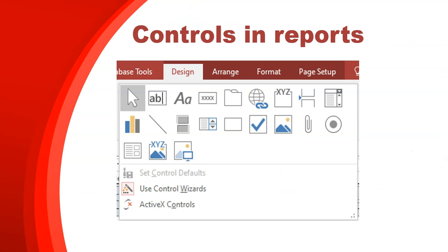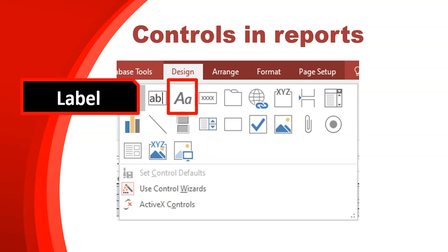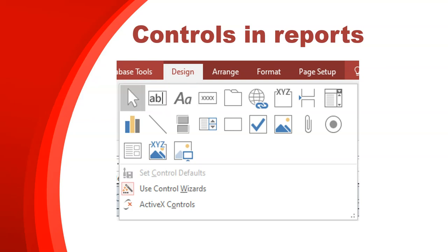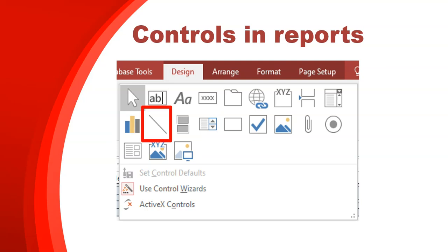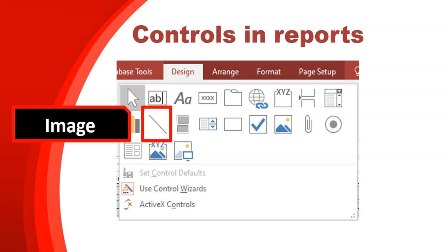There are some controls you can add to reports, very similar to what we did in forms. The basic ones: you can add a label — maybe you want to add your name or some other information on the report. If you want to connect to an image, maybe to show a logo, you can use the image component. And if you want to draw a line to separate everything, you can use that option too. We're going to try all of these in the actual report.